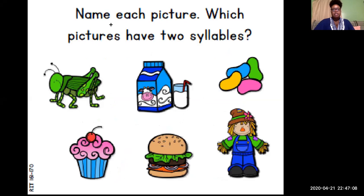All right, it says name each picture. Which pictures have two syllables? So we're going to clap these syllables out. This first picture right here, what is that a picture of? A grasshopper. Let's go ahead and clap that word out, grasshopper. How many syllables did we just clap out, grasshopper? Three syllables, good job friends.